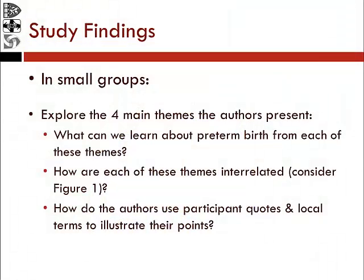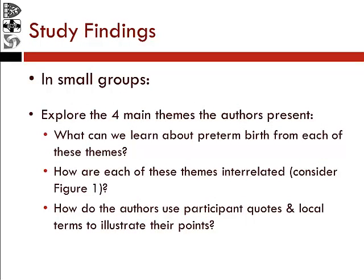Now we'll discuss the four main themes the authors present in the findings. The first theme is the community's conceptualization of preterm birth and pregnancy loss — how they conceptualize those two issues. This includes thinking of preterm births as a normal part of women's life, ways that women must deal with preterm births, and ideas the community had about the differences between miscarriage and preterm births.